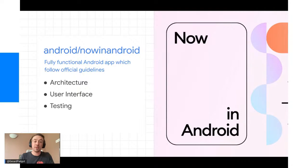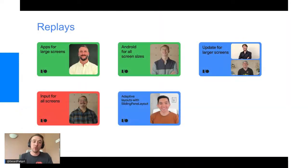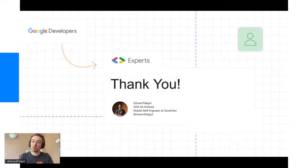L'application Now in Android est disponible sur GitHub à android/nowinandroid, complètement fonctionnelle, suivant les guidelines officielles de Google. Elle se concentre sur trois sujets : l'architecture, l'user interface et le testing. Si vous êtes curieux de savoir ce que préconise Google, je vous conseille d'aller la regarder. Merci, c'était beaucoup d'informations, j'espère que ça n'a pas été trop dense. Je suis prêt à répondre à vos questions.